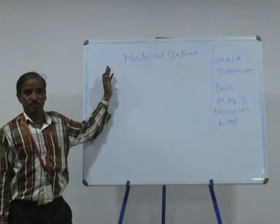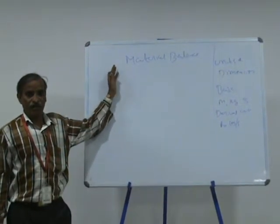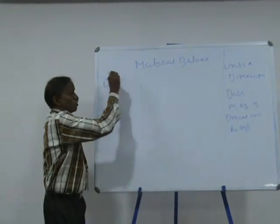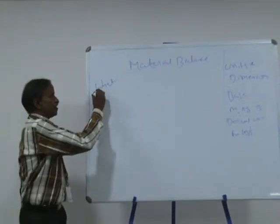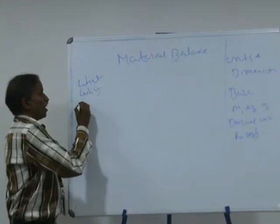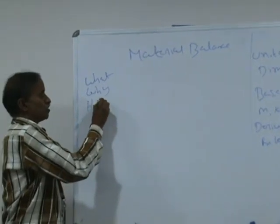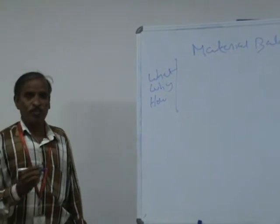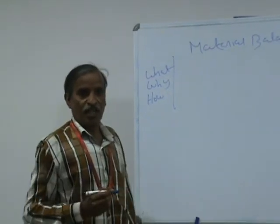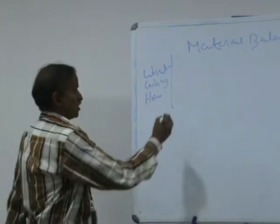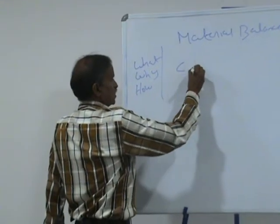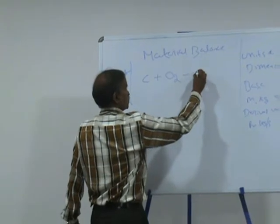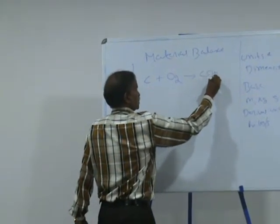Coming back to the topic: material balance. What is material balance? Why it is necessary and how to write the material balance? Before that, I would like to give a brief introduction about the stoichiometry principle. Consider this equation: C plus O2 gives CO2.